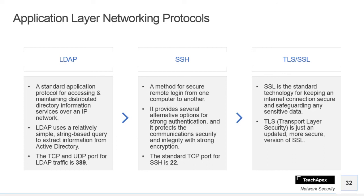Next we have TLS and SSL. SSL is the standard technology for keeping an internet connection secure and safeguarding any sensitive data. TLS — Transport Layer Security — is just an updated, more secure version of SSL. SSH and TLS/SSL are protocols used to secure data being transmitted over the network. SSH protocol uses encryption to secure the connection between a client and a server.